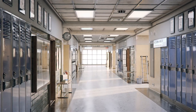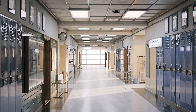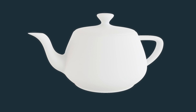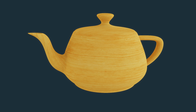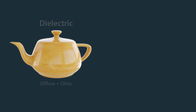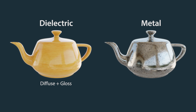Most materials in 3D are created the same way. You start with a diffuse shader, give it a texture, and then add gloss. This sort of material is called dielectric, and while probably 90% of all materials in the world are created this way, the other 10% is metal, which is different.